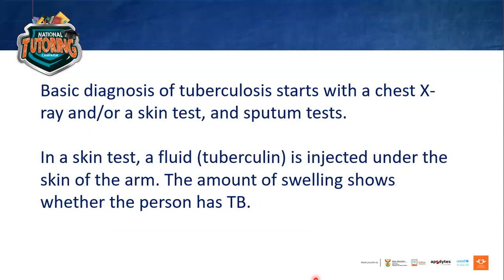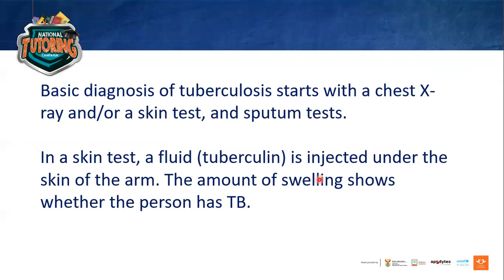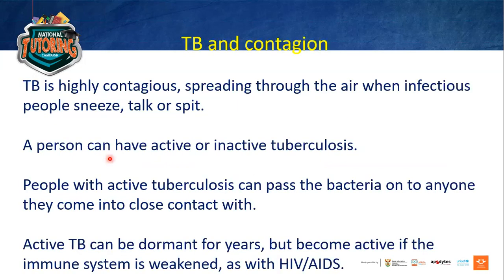Basic diagnosis: if you suspect you have TB or have been in contact with someone who has it, get tested early so treatment can also start early. Diagnosis starts with a chest X-ray or skin test and a sputum test. In a skin test, a fluid is injected under the skin of the arm, and the amount of swelling indicates whether the person has TB.